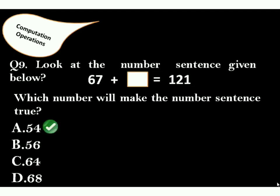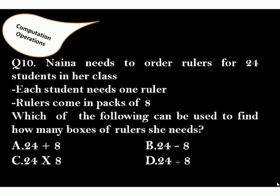Naina needs to order rulers for 24 students in her class. Each student needs one ruler. Rulers come in packs of 8. Which of the following can be used to find how many boxes of rulers she needs? Correct answer is option D. Each pack has 8 rulers. 24 students are there. Naina needs 3 boxes.